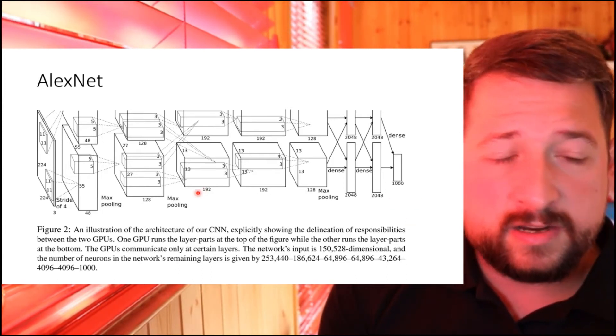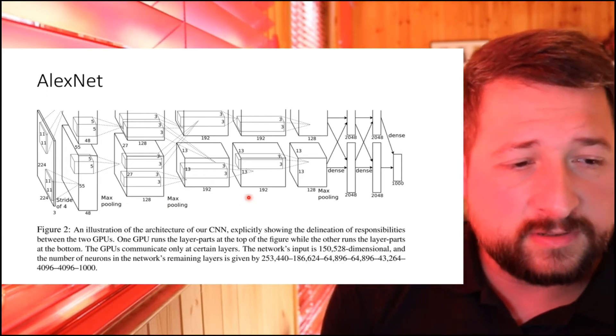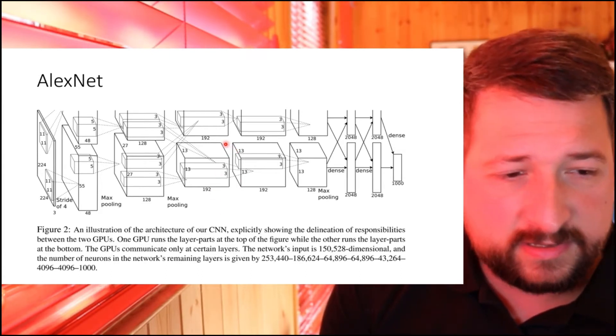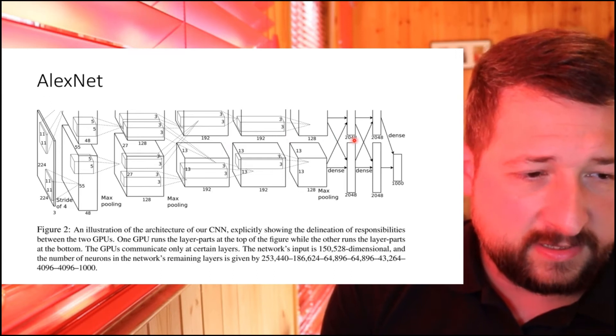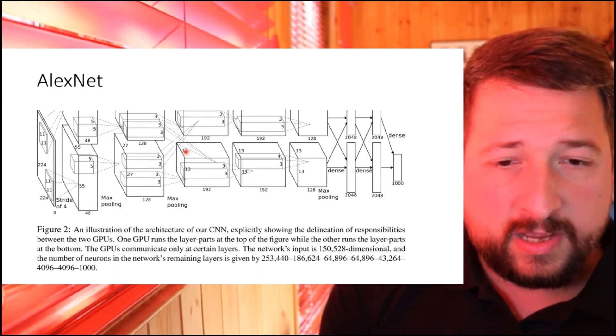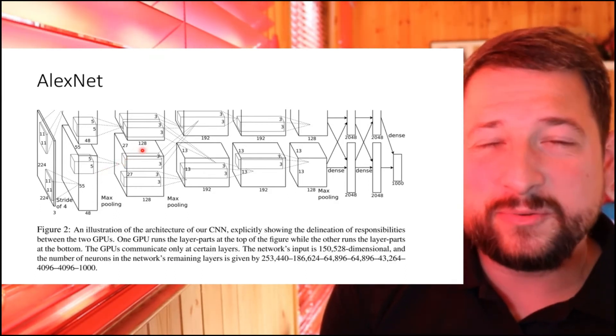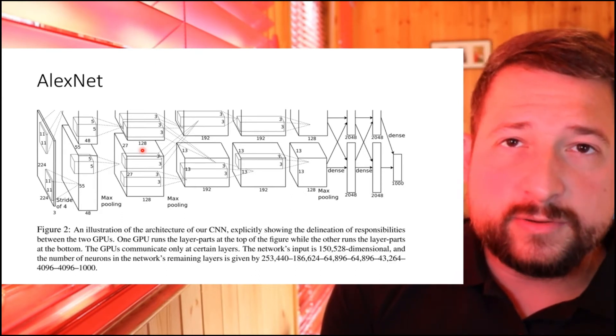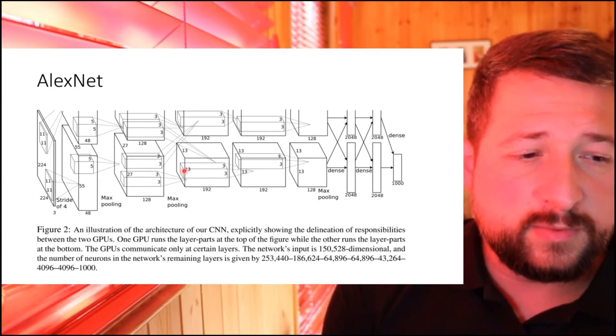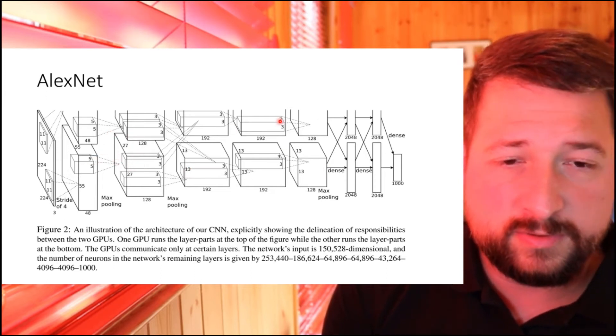If you look at this AlexNet diagram, it looks kind of like the normal convolutional neural network diagrams you've seen, except that there is one difference, which is that you can see it's kind of split here, right? So this has two rows, and the reason is mostly historical. This AlexNet in 2012 was trained on GTX 580 GPUs, and these cards only had 3 gigabytes of memory, so it couldn't actually fit this entire network on these cards.